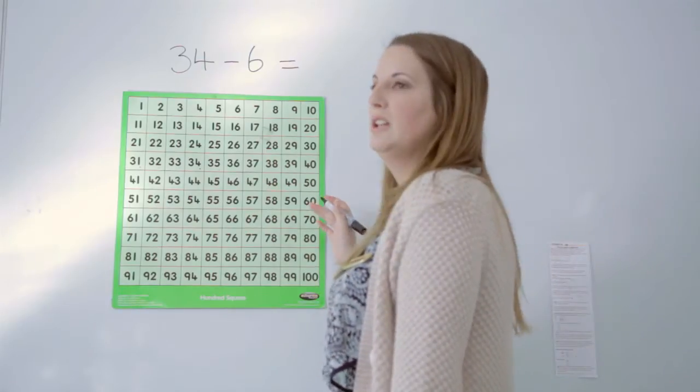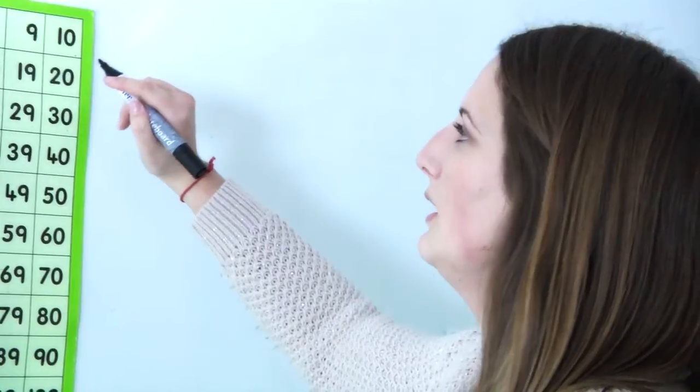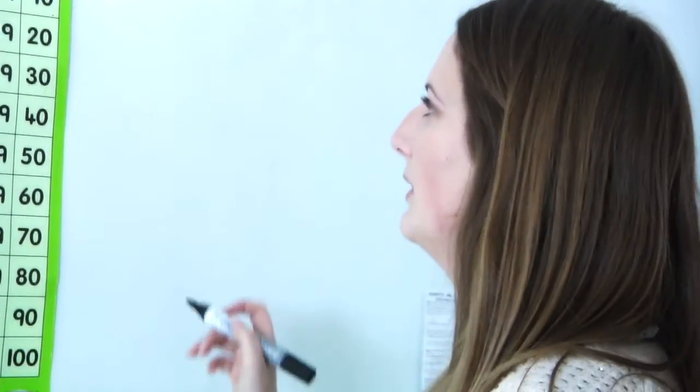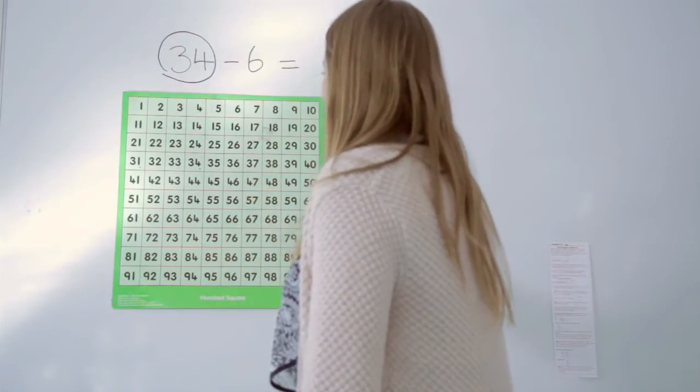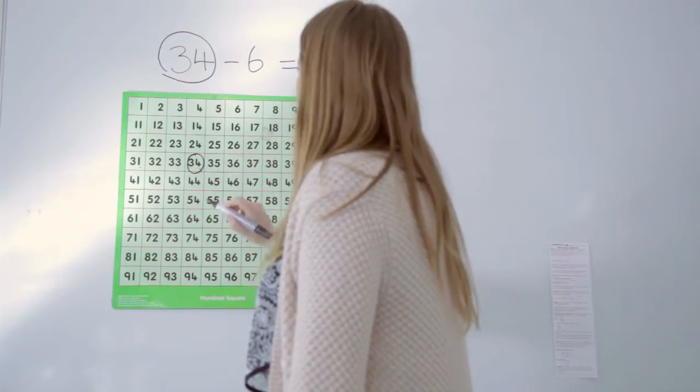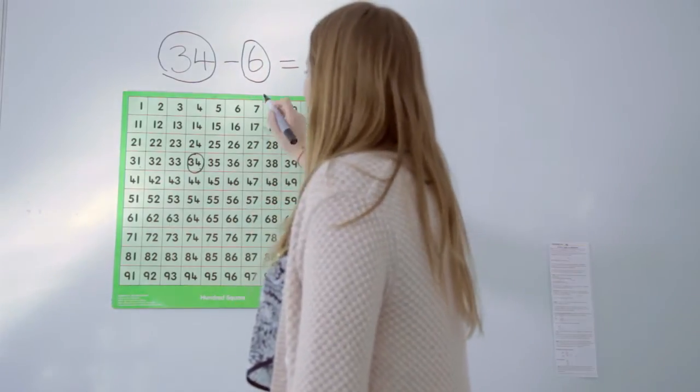When children begin to develop written methods of subtraction, they start by using a hundred square to help them. So they would begin by finding the number that they would like to take away from, 34, looking at the number they need to take away and counting.